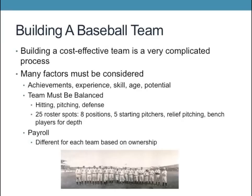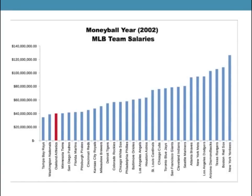Another huge factor is the payroll of the team, which varies depending on the team's ownership. Some teams have high payrolls since their owners are willing to pay the money, whereas other clubs have lower payrolls because they lack the budget. Here is an example of the MLB salaries in 2002, in which the book Moneyball was written after. The red bar indicates the Oakland A's, who had the third lowest payroll that year. Compare that to the New York Yankees, who had the most — about three times as much — since having more money allows them to sign better players.